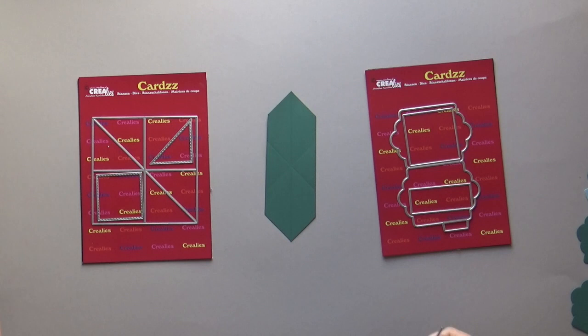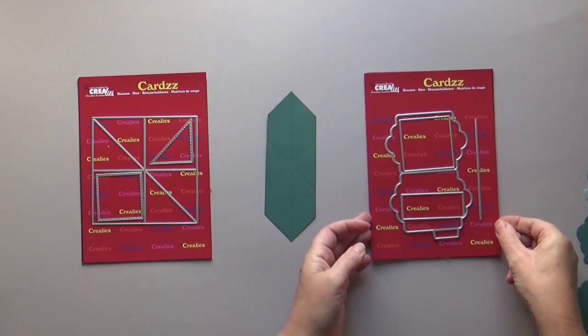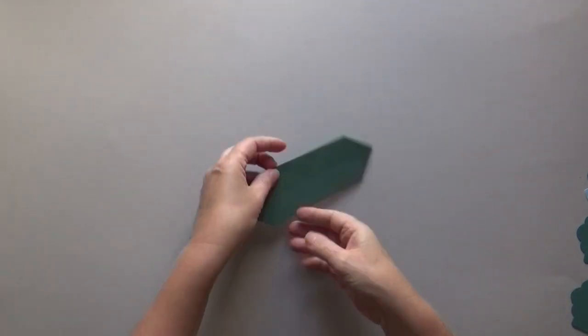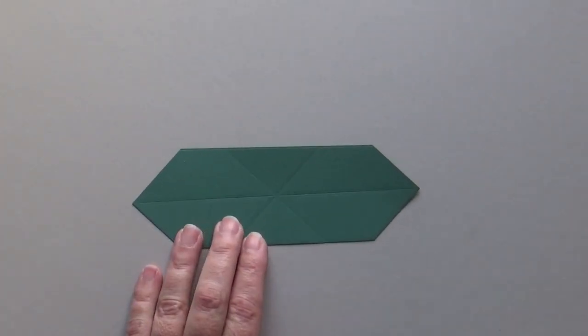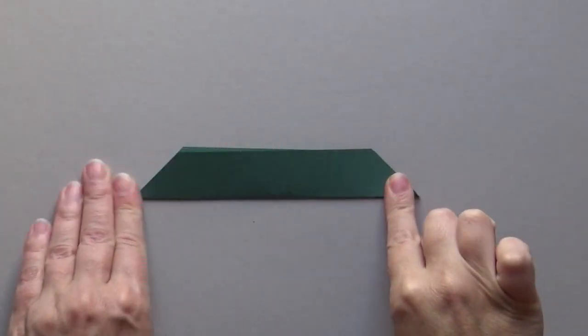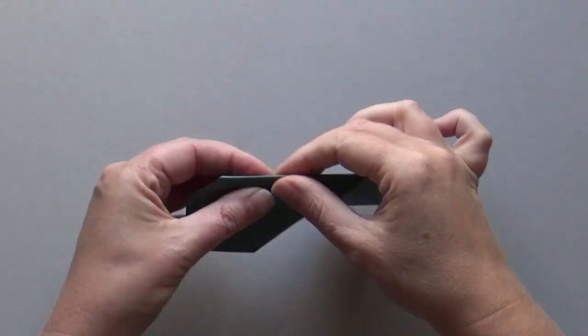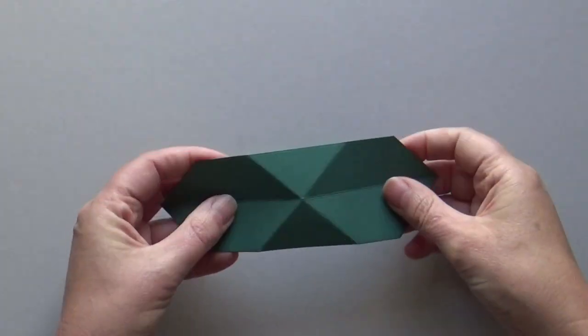You now have this shape. Fold the twist system. Fold the diagonal scoring line in a valley fold. Fold the scoring lines forming a cross in a mountain fold.